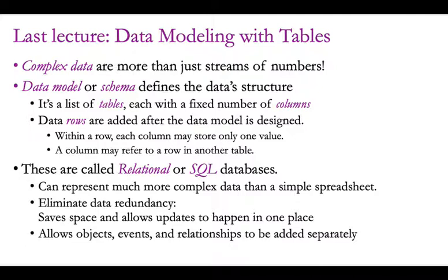Each table has different numbers of rows and columns that represent different aspects of the data. They can be linked together using foreign keys, which we'll see later. You basically organize your data so that every row combines a set of elements that have to appear together — all the columns have to be defined in a given row. These are called relational or SQL databases, and they can represent much more complex data than a simple spreadsheet. It also allows you to eliminate data redundancy by having cross-references, and to add data separately for all the different tables as necessary.